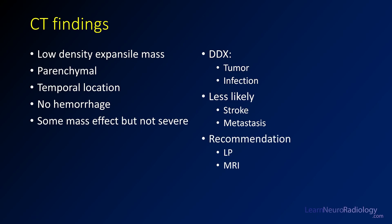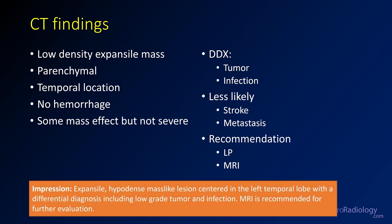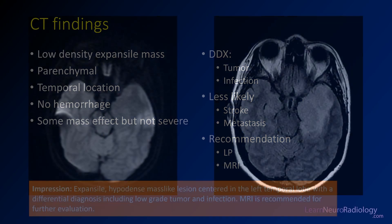This person is going to need an MRI. They may or may not need an LP if there's concern for infection. When you're making your impression on this case, you want to describe this as an expansile, hypo-dense mass in the left temporal lobe, with a differential including low-grade tumor and infection. MRI is recommended. That gives them everything they need to know in the emergent setting.